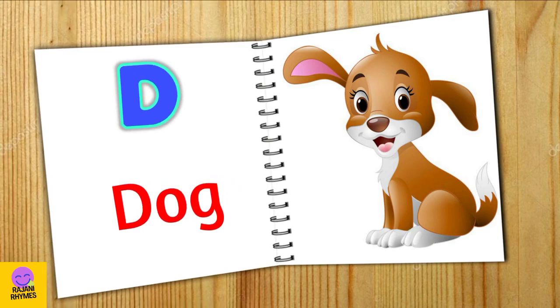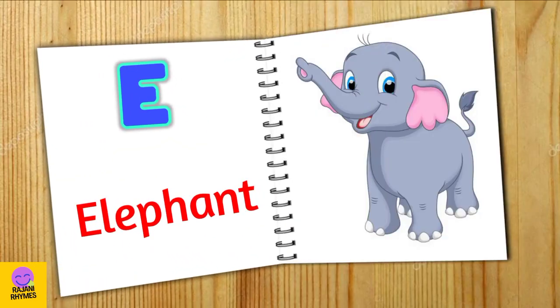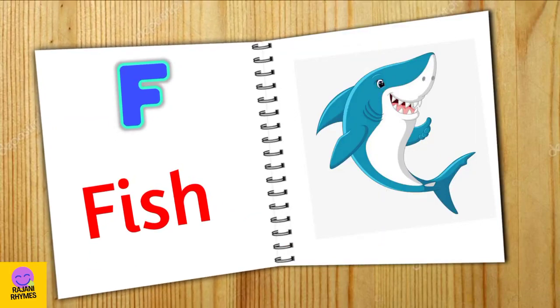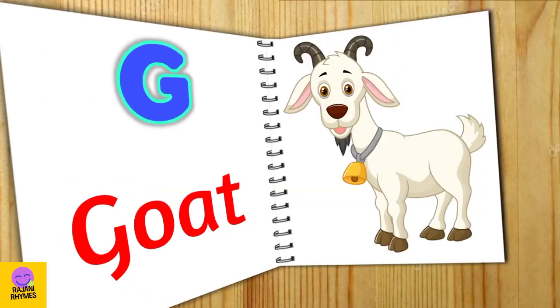D. D for dog. E. E for elephant. F. F for fish.